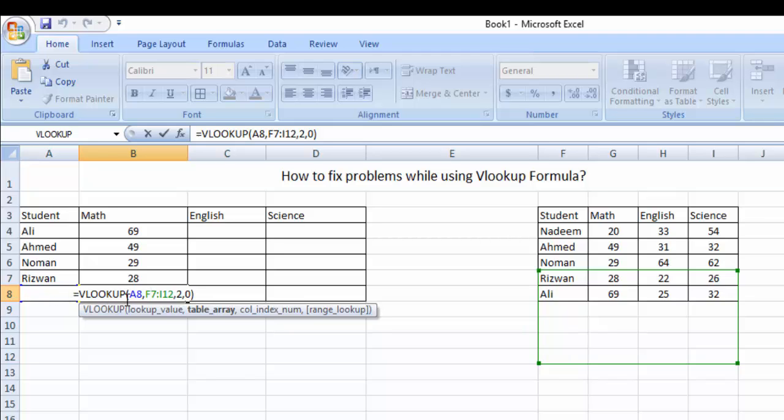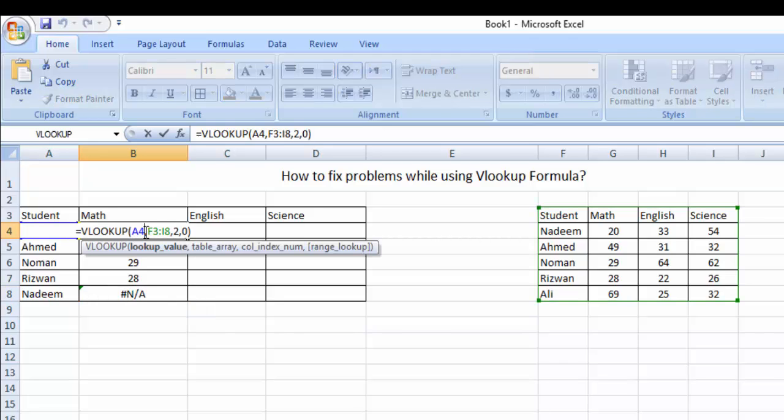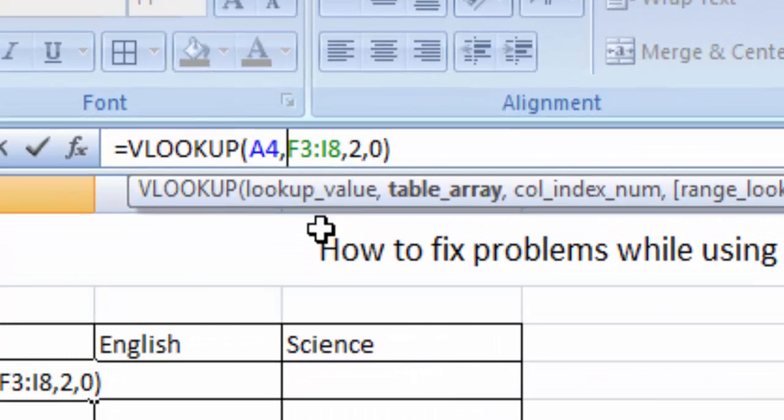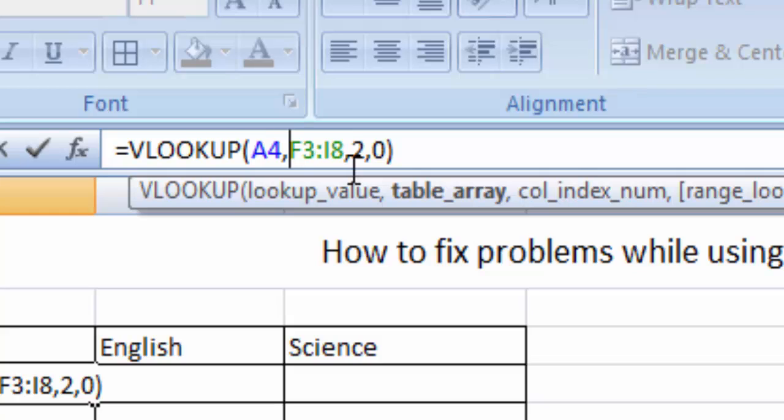So friends, now we will learn how to fix this problem. We will add some dollar sign here. This is the main range that we select from where we want to get the marks of these students. So this should be fixed. This should not move if we move down. So we will fix it with a dollar sign. Just type here dollar.